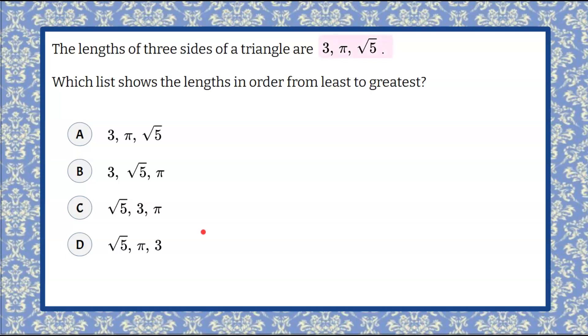Welcome back. So we have three side lengths of a triangle: 3, pi, and the square root of 5 and we're going to put them in order from least to greatest. So let's line them up. We have 3, pi, and the square root of 5.